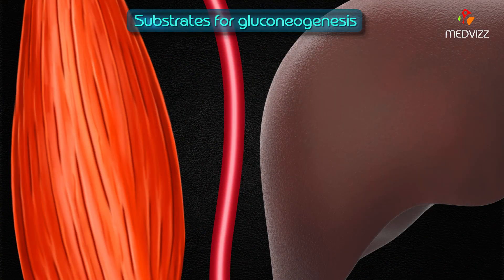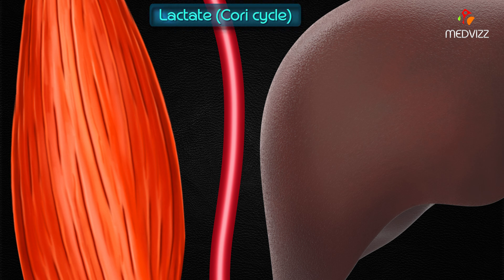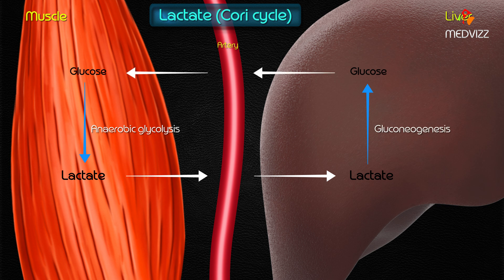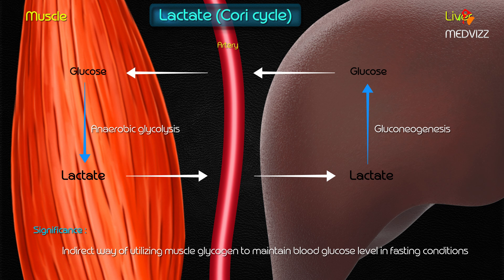Now, what are the substrates for gluconeogenesis? The first is lactate, which gives rise to the Cori cycle. Lactate is mainly formed from anaerobic glycolysis in skeletal muscles and RBCs. It diffuses into the blood, is carried to the liver, and converted into glucose by gluconeogenesis, then transported back to tissues. This recycling of lactate is called the Cori cycle, which provides an indirect way of utilizing muscle glycogen to maintain blood glucose levels in fasting conditions.